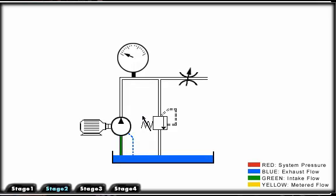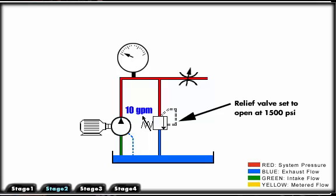This circuit uses a fixed volume pump. To reduce flow to the actuator, we must bypass a portion of the fluid over the relief valve.